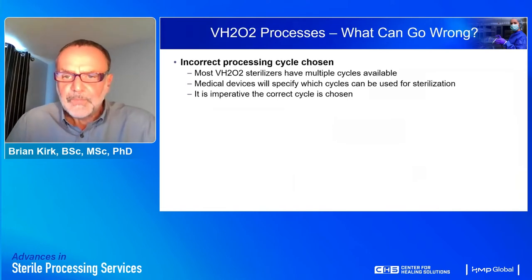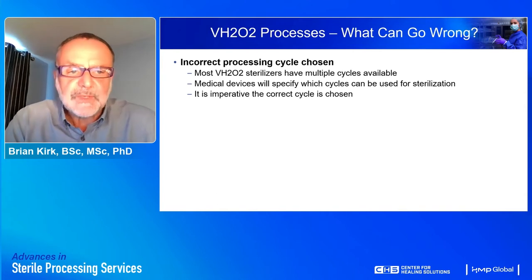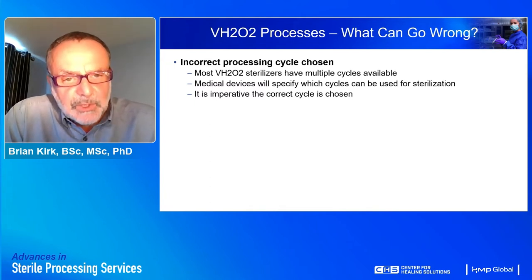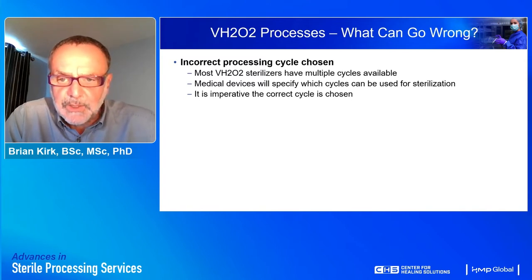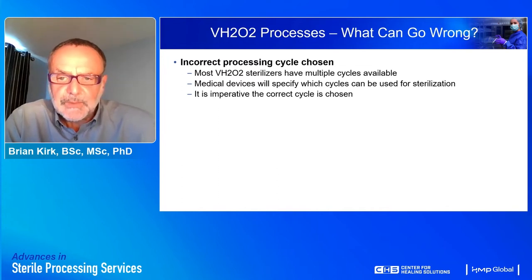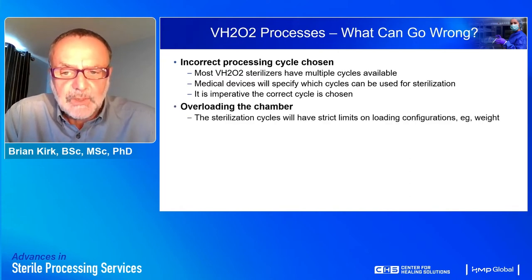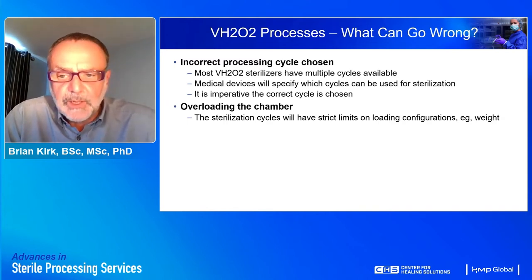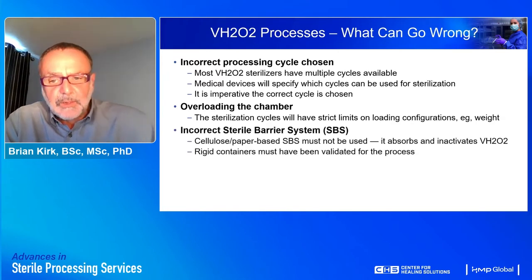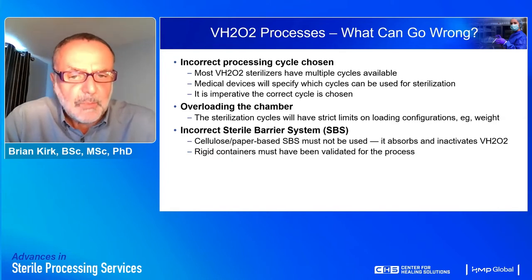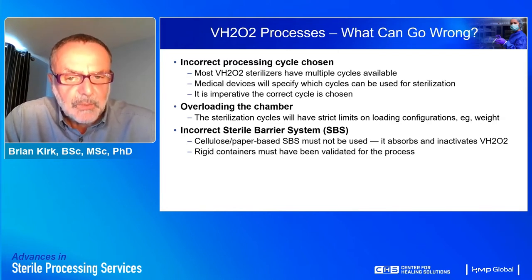What can go wrong? Most hydrogen peroxide sterilizers have several operating cycles built in, designed to process medical devices of different complexities — a short cycle for surface sterilization or a much longer cycle for a complex instrument like an endoscope. It's very important that the instructions accompanying both the medical device and the sterilizer are followed, that the chamber is not overloaded, and that instrument sets are positioned at the correct location. The sterile barrier system must not contain cellulose, because cellulosic paper-based packaging materials will absorb and inactivate hydrogen peroxide, preventing it from effectively killing microorganisms.